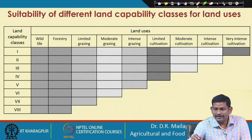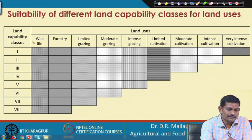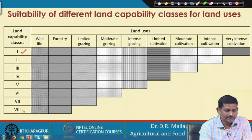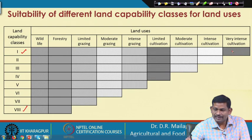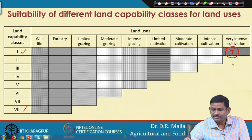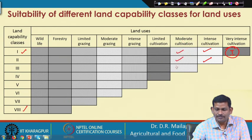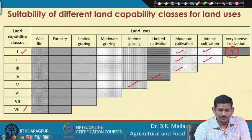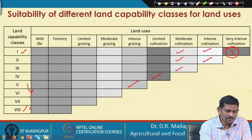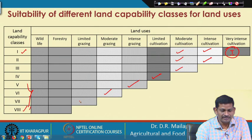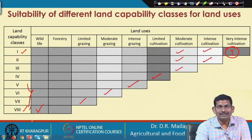The suitability of different land capability classes for land uses: class 1 supports very intense cultivation; classes 1 and 2 support intense cultivation; up to class 3 supports moderate cultivation; limited cultivation up to class 4. Intense grazing up to class 5; moderate grazing up to class 6; limited grazing class 7; forestry class 8. Wildlife supports almost all classes.